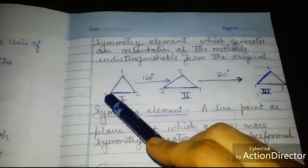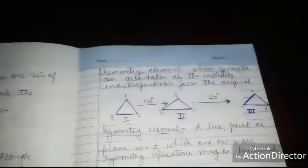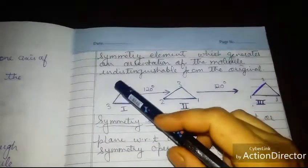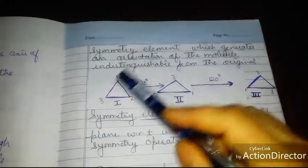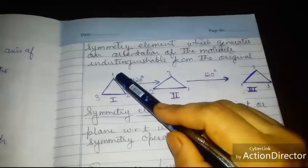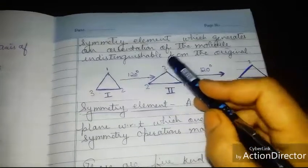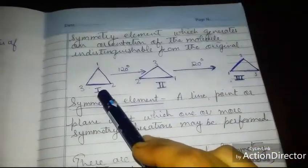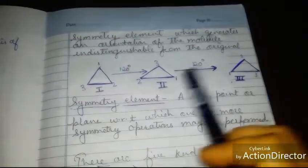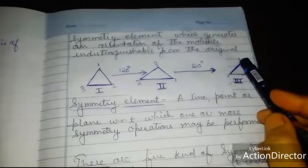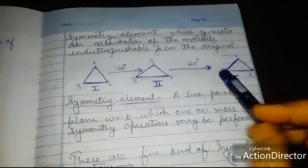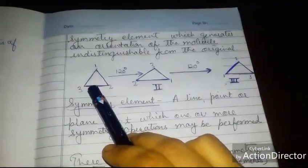Consider this molecule — I am giving it a 120-degree rotation. After the rotation you get the same molecule. If I number the vertices 1, 2, 3, then after 120-degree rotation: 1 moves here, 2 goes there, and 3 goes there. After another 120-degree rotation: 2 goes here, 3 comes here, and 1 comes here. Figures 1 and 2 are equivalent, and 2 and 3 are equivalent but not identical. After a third 120-degree rotation you get the same molecule back. This is what is known as a symmetry operation.